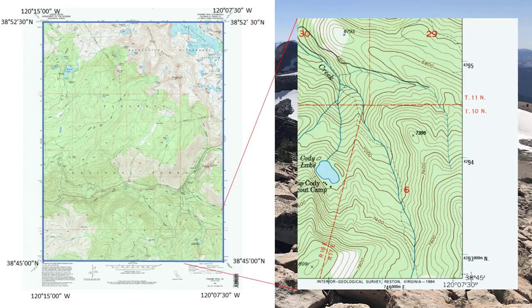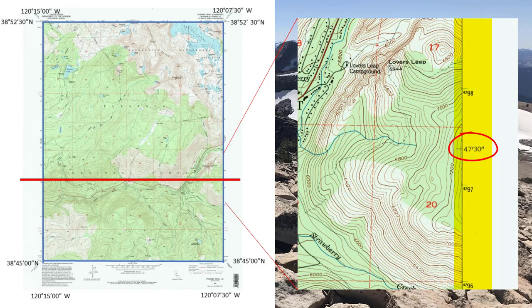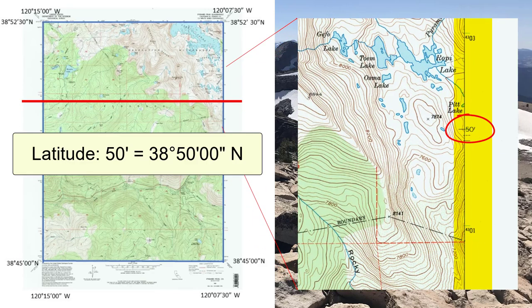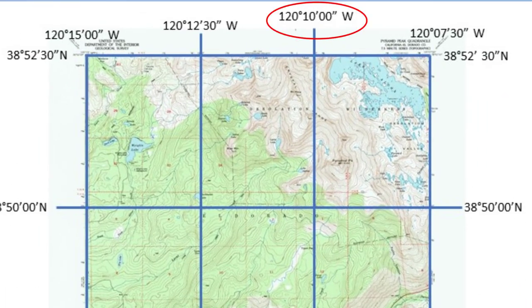Now let's look at the rest of the borders of the map. Somewhere amongst all these extra grid system numbers are subdivisions of the latitude and longitude. Here we can see an abbreviated latitude — 47 minutes, 30 seconds — matched on the opposite side, telling us it's the latitude line 38 degrees, 47 minutes, 30 seconds north. Continuing up, we find 50 minutes, meaning 38 degrees, 50 minutes, 0 seconds north. So there are 4 latitude lines breaking up the quadrangle into a grid. Similarly, there are 4 longitude lines with subdivisions at 120 degrees, 10 minutes, 0 seconds west and 120 degrees, 12 minutes, 30 seconds west.